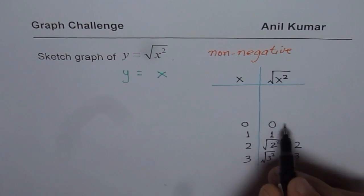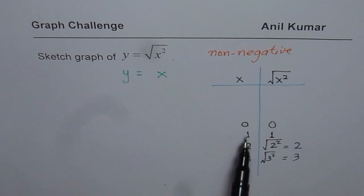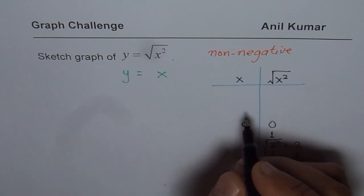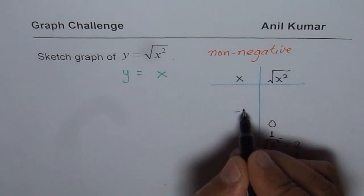So here, what you see is that x and square root of x, you get the same values, 1, 1, 2, 2, 3, 3. But what happens when I substitute minus 1?